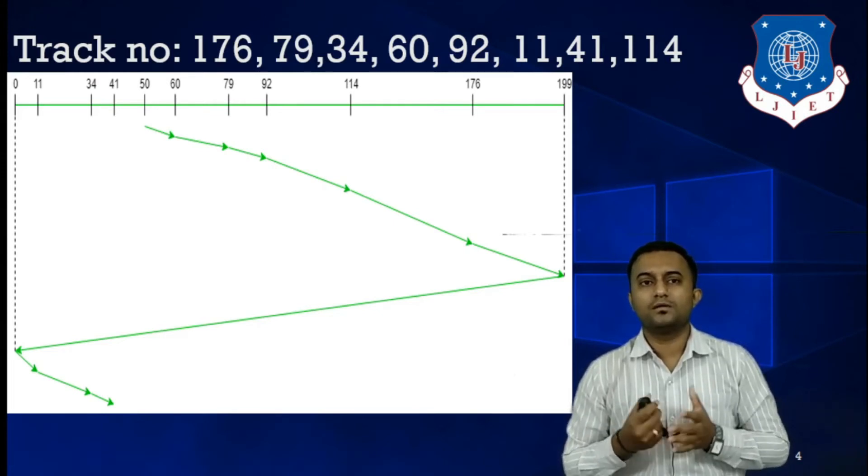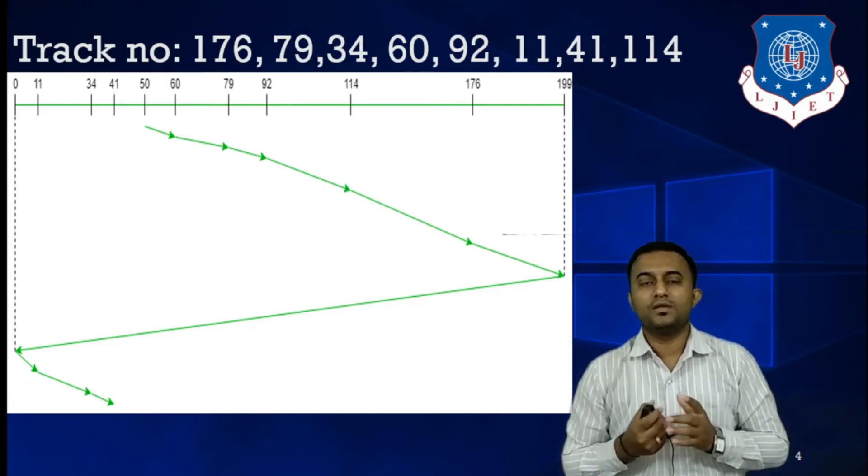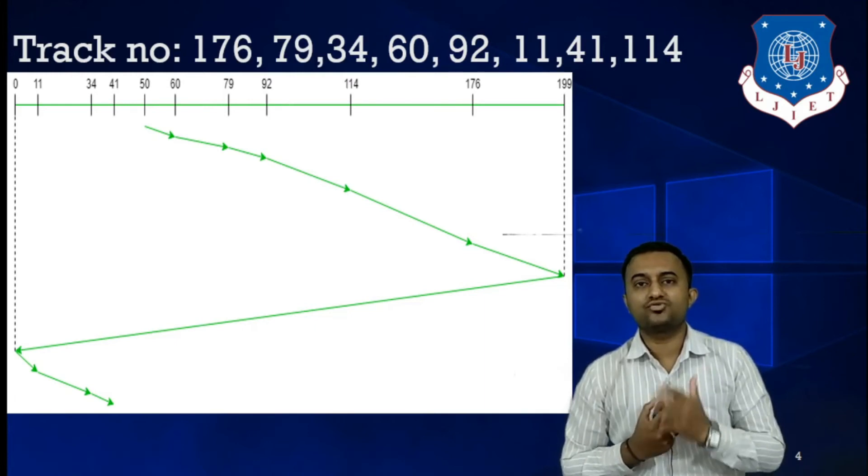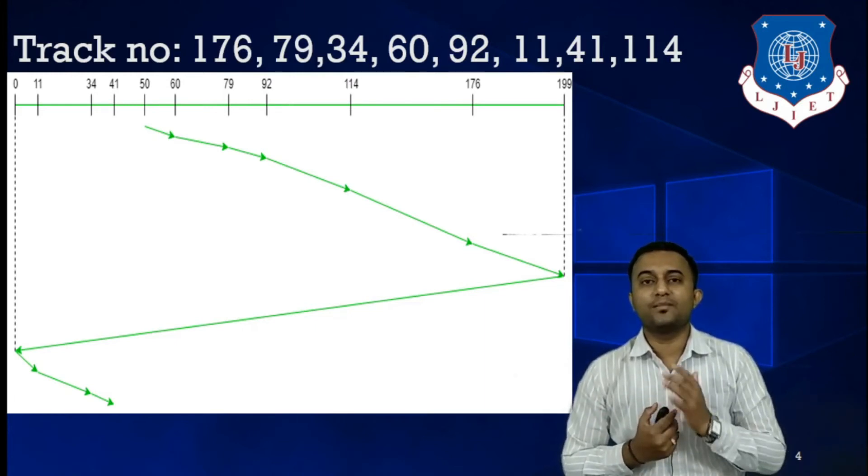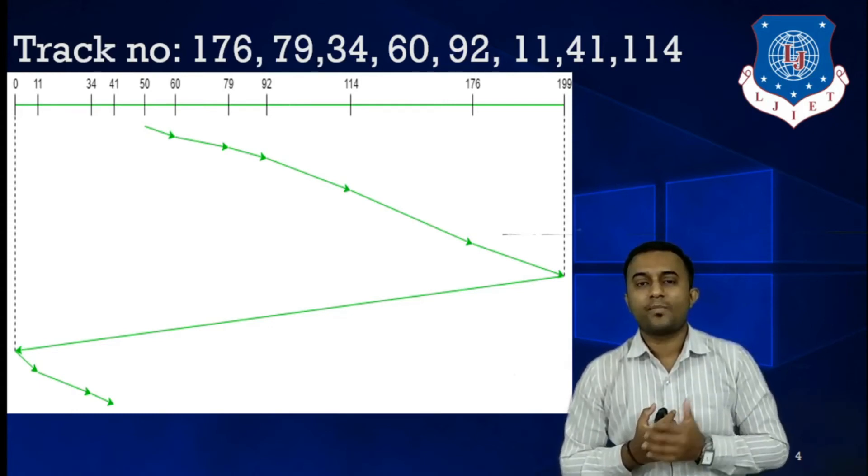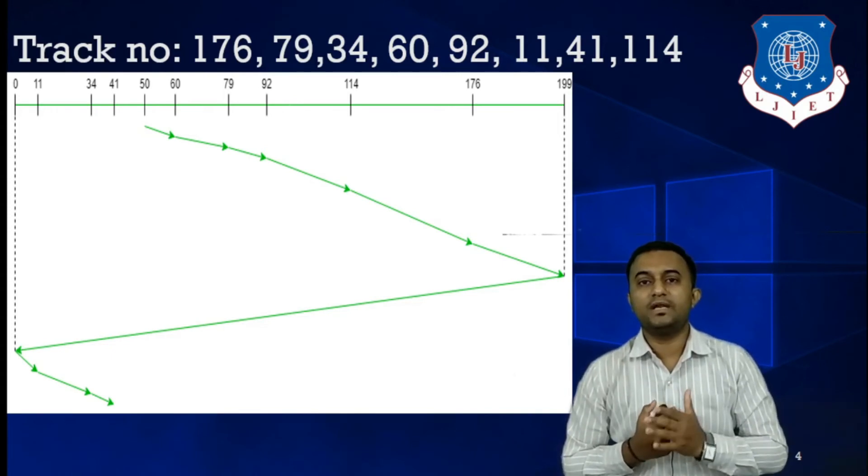Now, once in this one go, in the first direction, you can see in the case of SCAN algorithm, once we started our journey in a particular direction, in that direction we will reach to the last track number. Same thing is applicable over here. There is no change in first direction. We will reach to the last track number, that is 199 in this case.